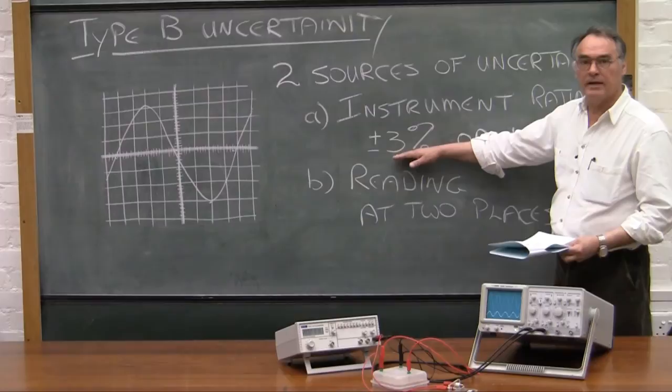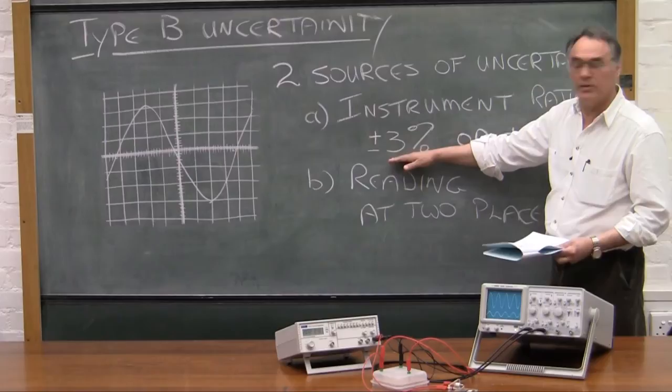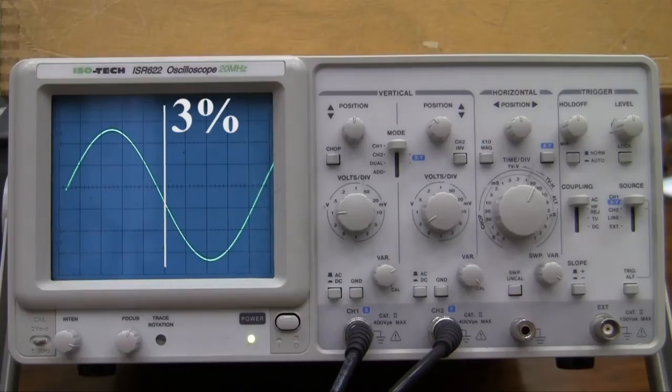On the vertical scale, that's the voltage scale, the uncertainty in the instrument rating is plus minus 3%.